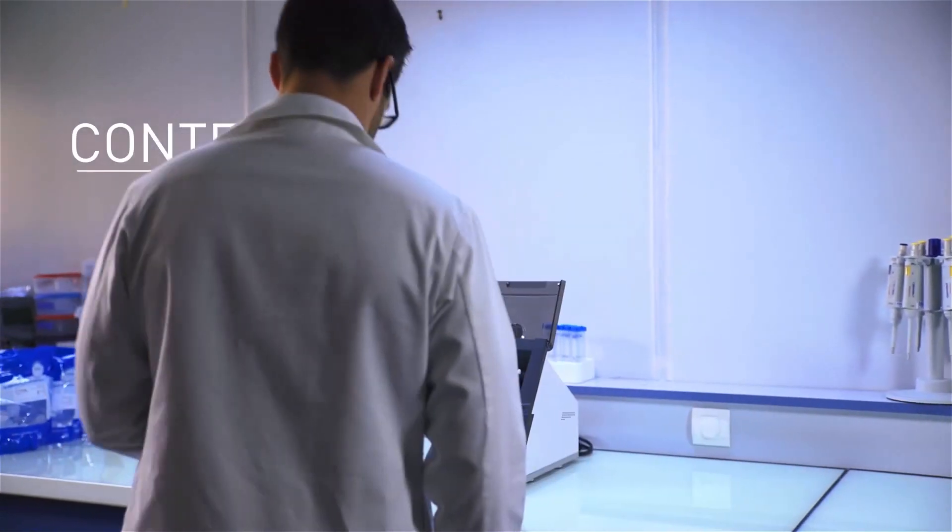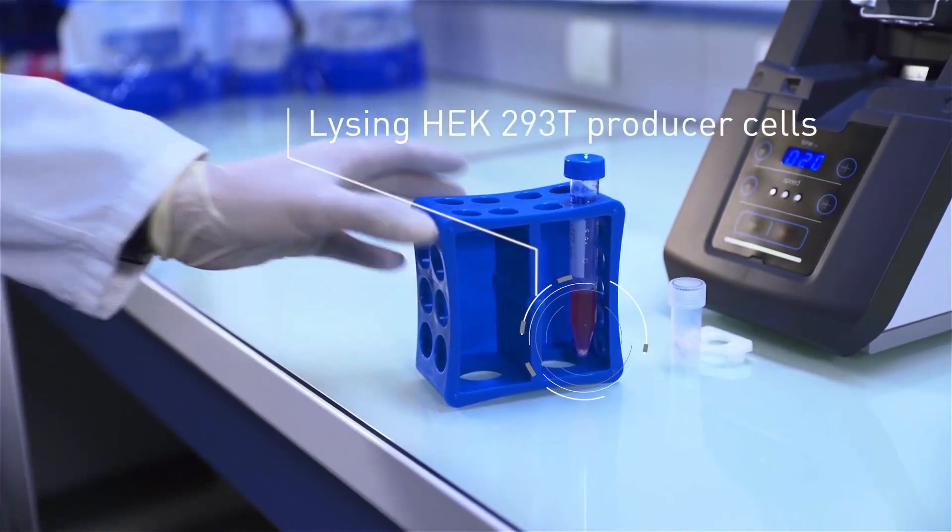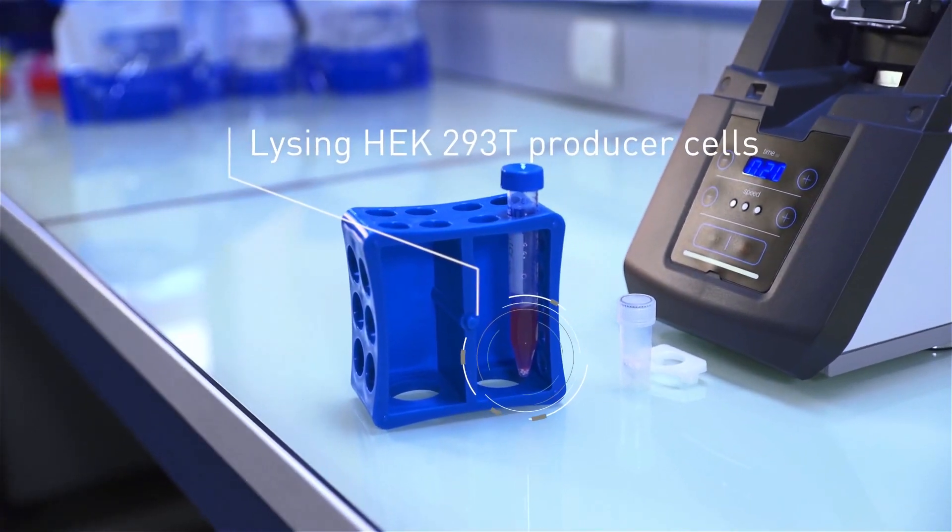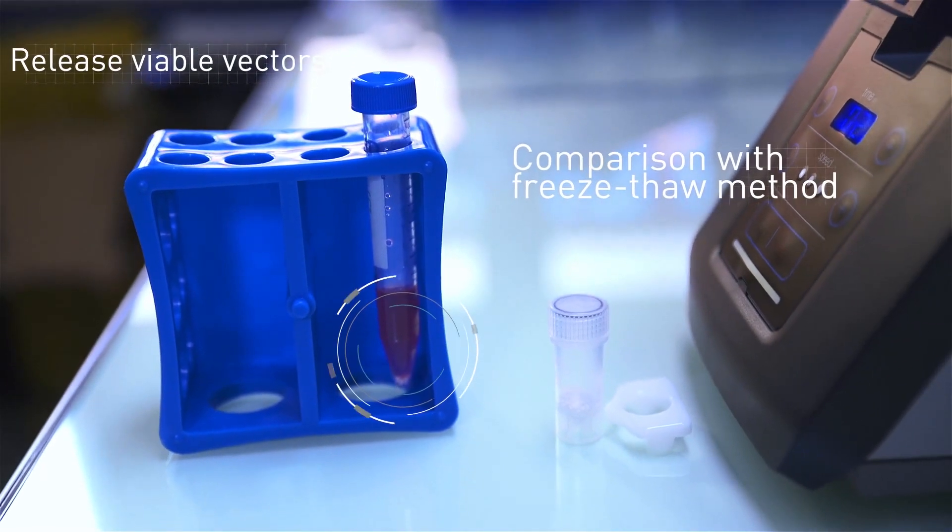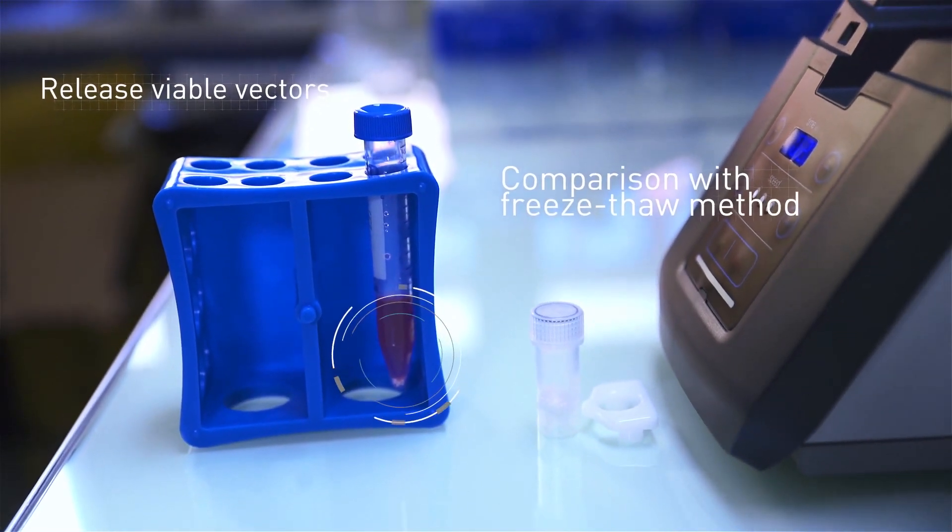The aim of this study is to use the Minilis homogenizer to improve on a method of lysing HEK293T producer cells to release viable intracellular viral vectors.